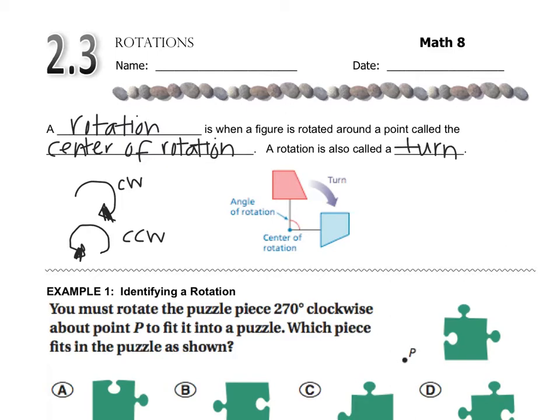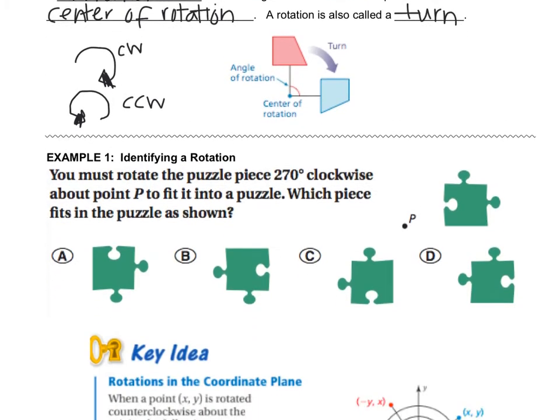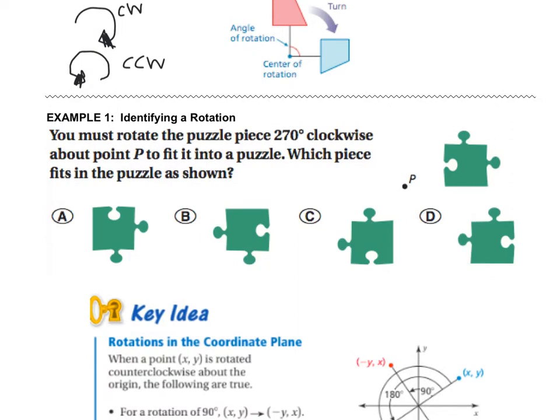Alright, let's look at example one. You must rotate the puzzle piece 270 degrees clockwise about point P to fit into a puzzle. Which piece fits the puzzle as shown? First thing we need to do is talk about the degrees of rotation. So turn your paper with me. We're going clockwise.